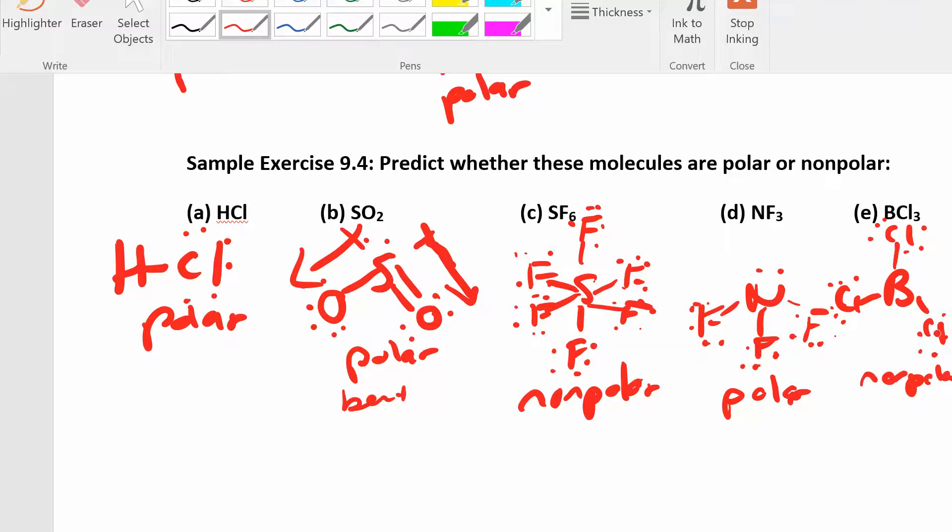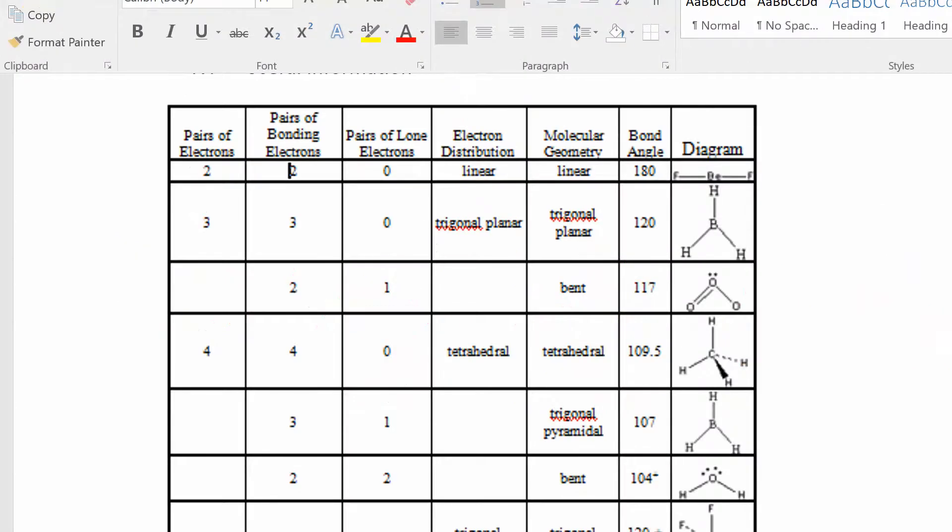So if you have lone pairs around your central atom, a lot of times you end up with something that is polar. It's polar.